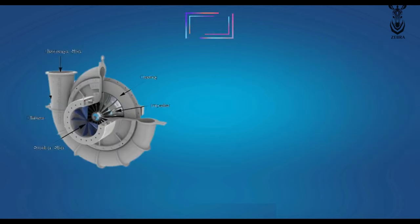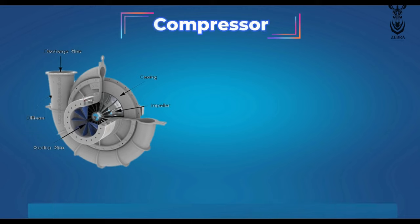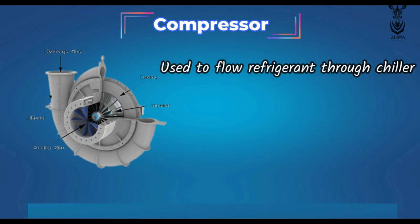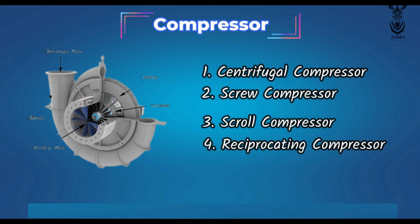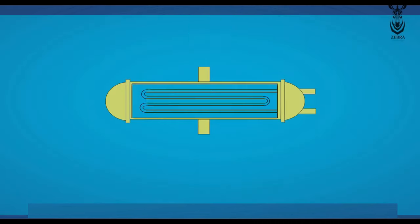The compressor is an important component in the chiller. It is used to make the refrigerant flow throughout the chiller. Commonly, there are four types of compressors: centrifugal compressor, screw compressor, scroll compressor, and reciprocating compressor.